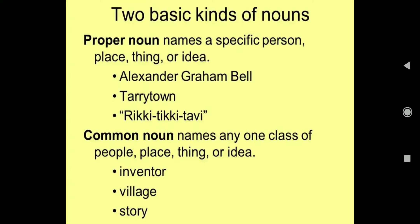The second one is common noun. Common noun kia hote hain — it indicates any one class of people, place, thing or idea. Jab kisi class ko represent kar raha ho — poore place ko, kisi people ki class ko, place ki class ko, thing ki class ko, idea ki class ko — poore group ko represent karne ki baat ho rahi hai, to wahan pe yeh common noun hoga.